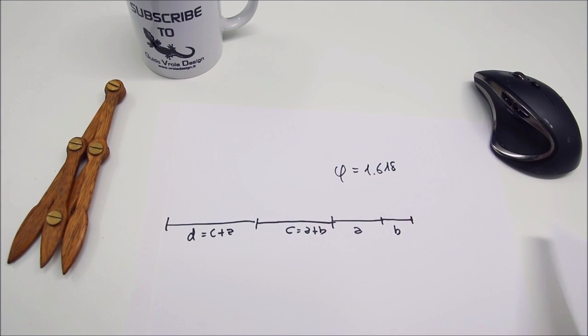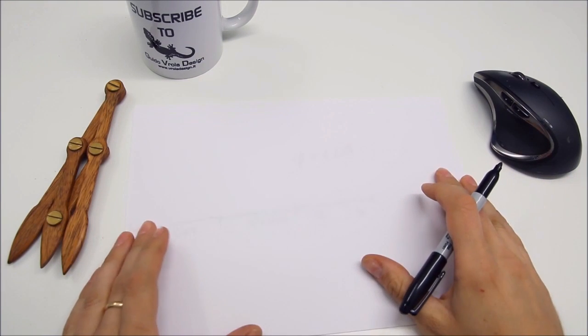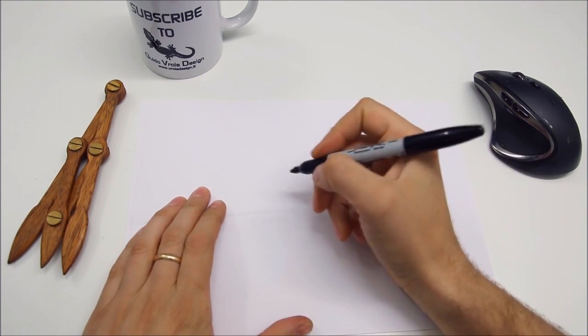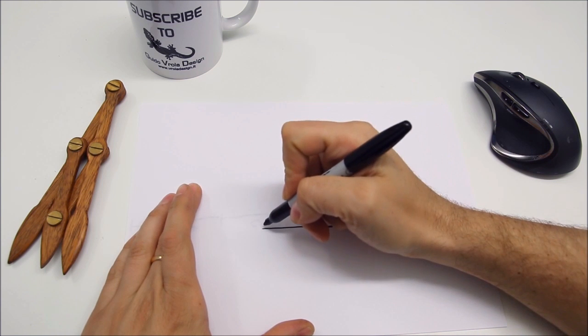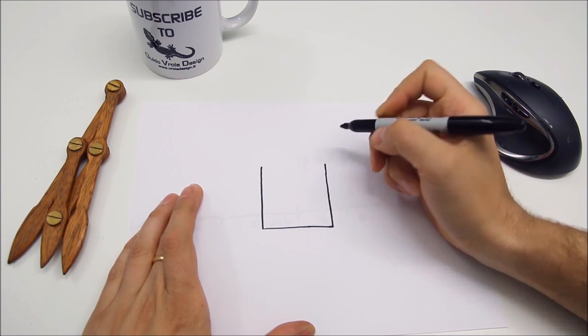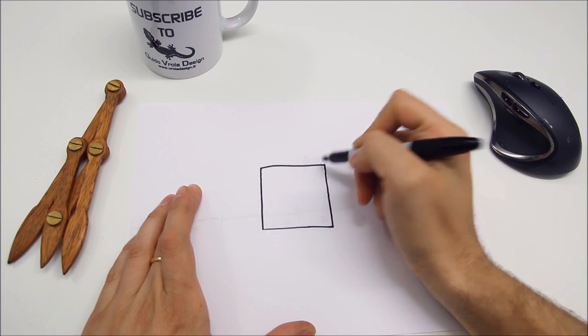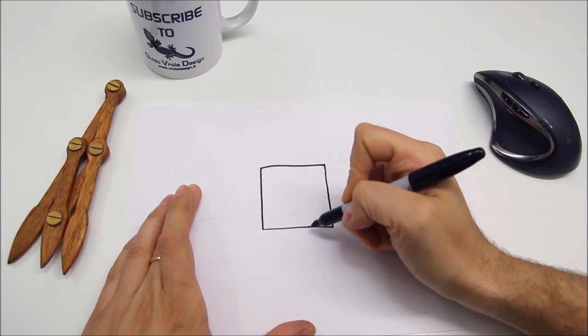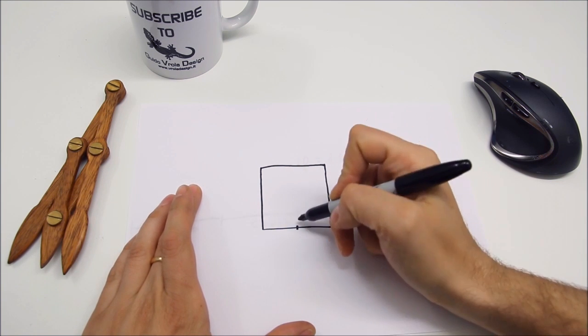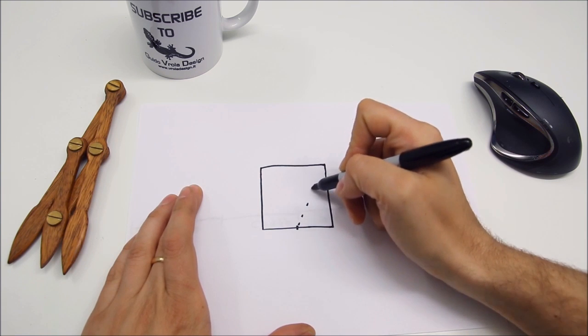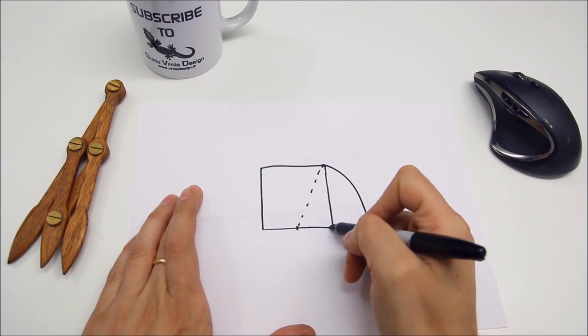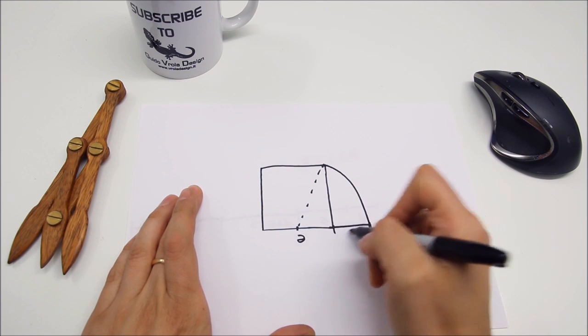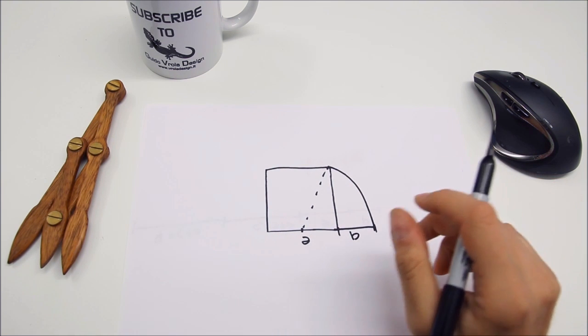If you want to draw these two segments in proportion without using a calculator, this is pretty simple. All you have to do is to draw the first segment and construct a square on this segment. Then find the middle of the segment, point your divider in the middle of this segment and trace a line, and you find the second segment that is in golden proportion with the first one.